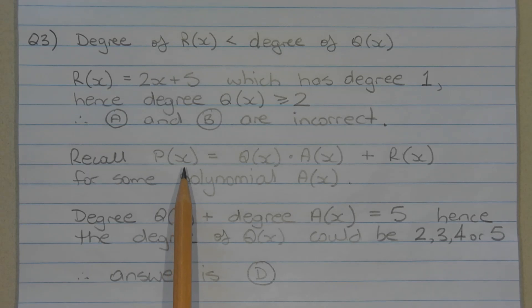Recall that the polynomial p of x can be expressed as q of x times a of x plus r of x for some polynomial a of x. Now the degree of q of x plus the degree of a of x equals 5. Hence, the degree of q of x could be 2, 3, 4 or 5. Therefore, the answer is option d.